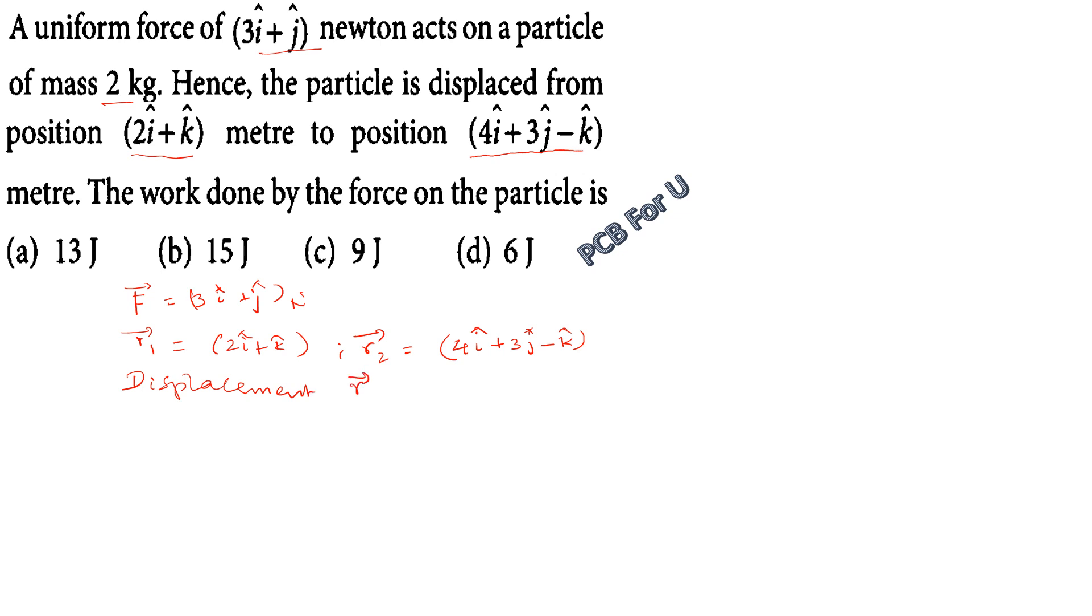The displacement r is r2 minus r1, which equals 4i cap plus 3j cap minus k cap minus 2i cap minus k cap. This simplifies to 2i cap plus 3j cap minus 2k cap.